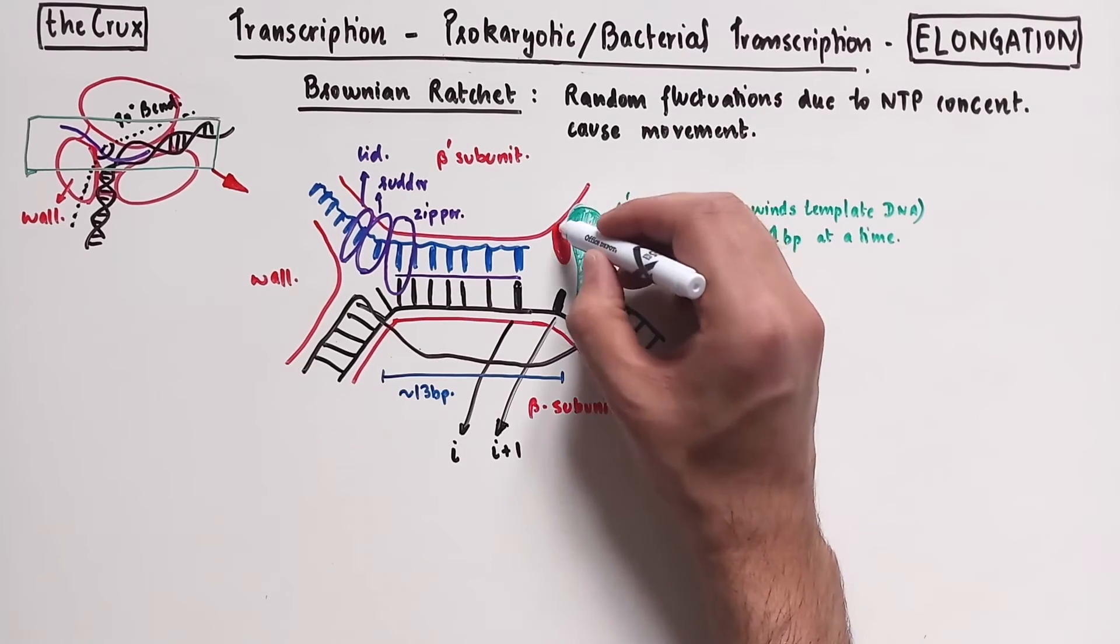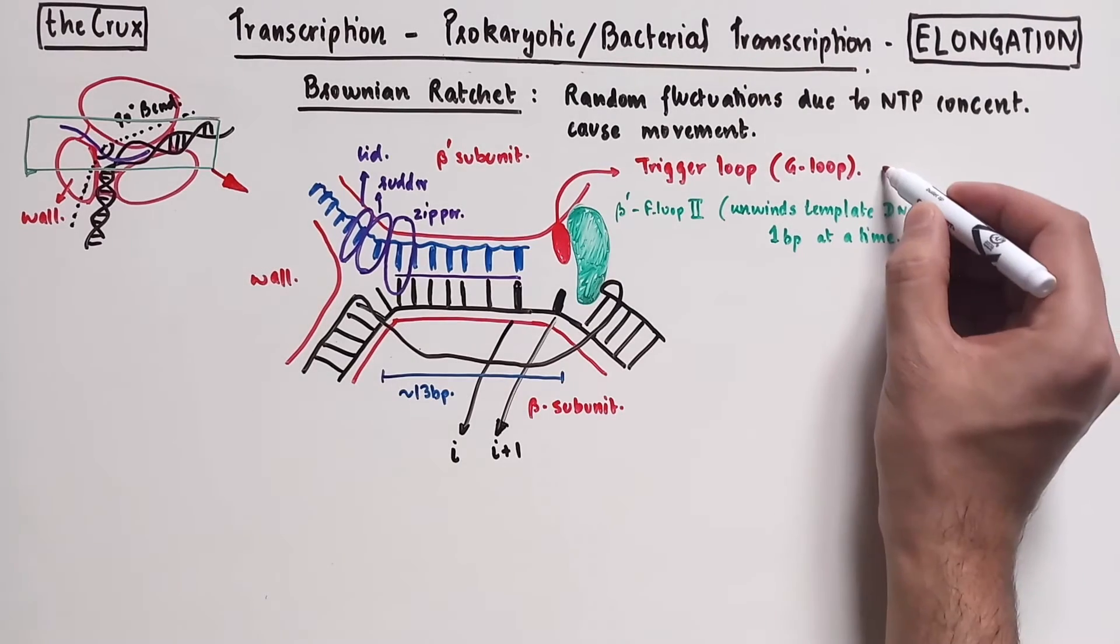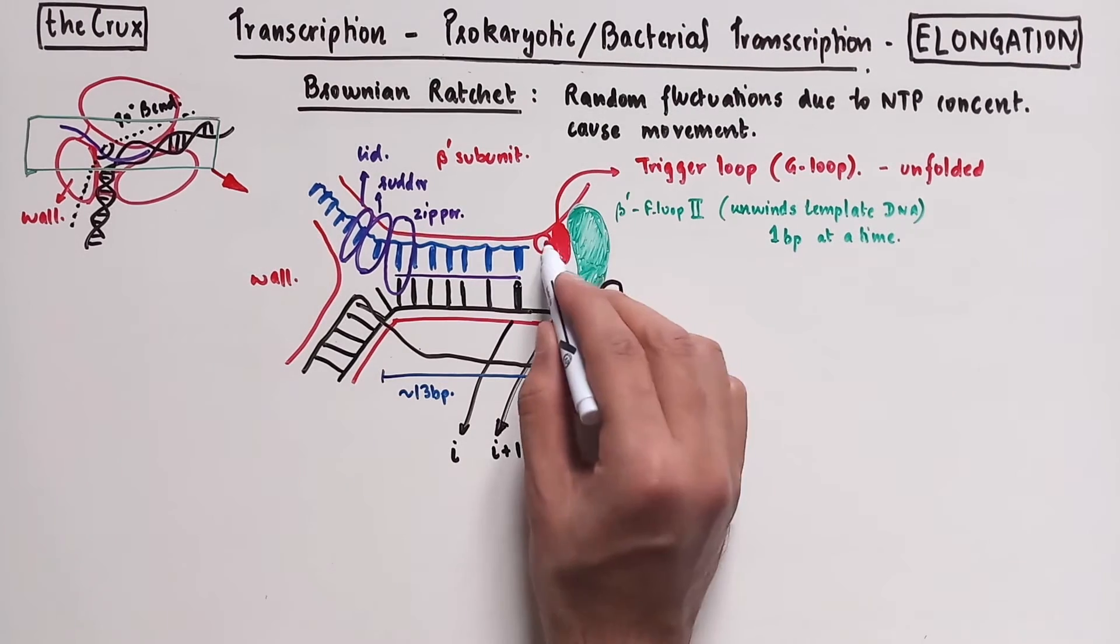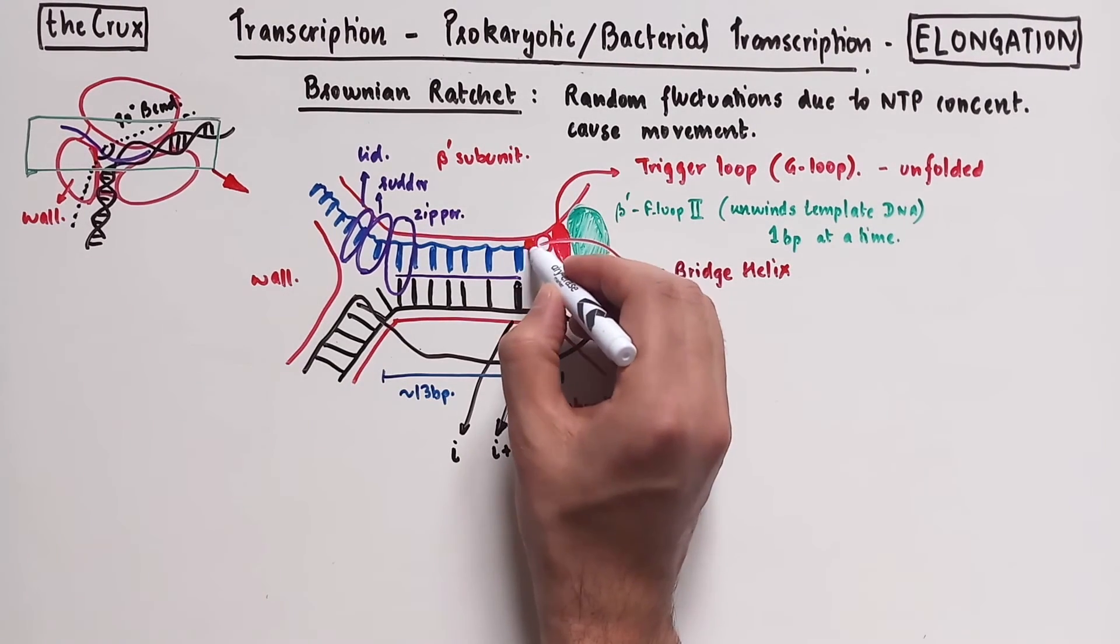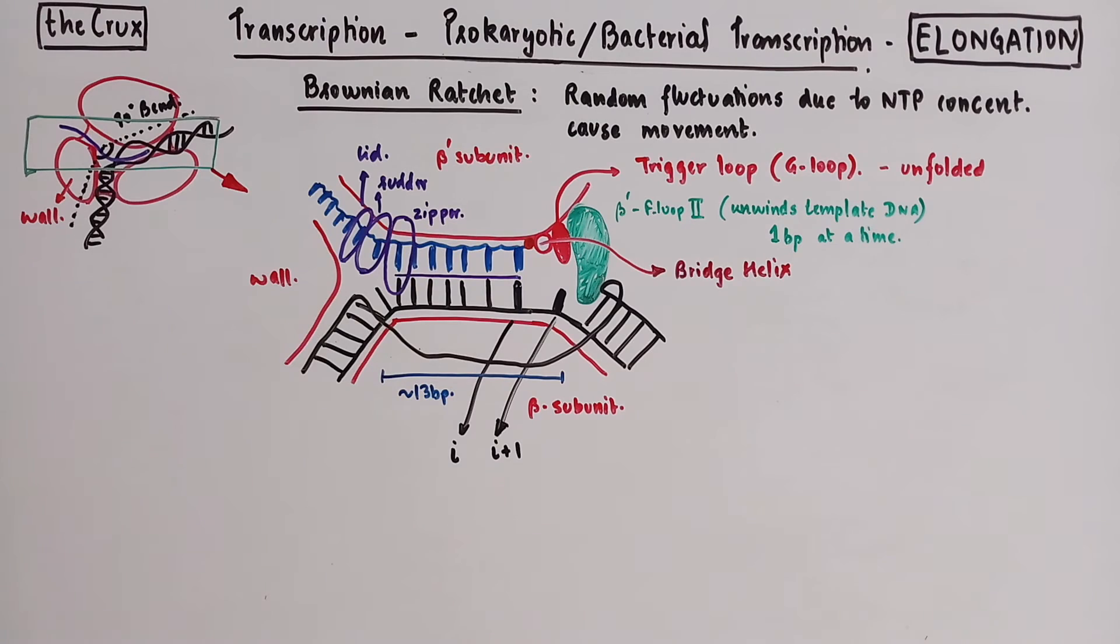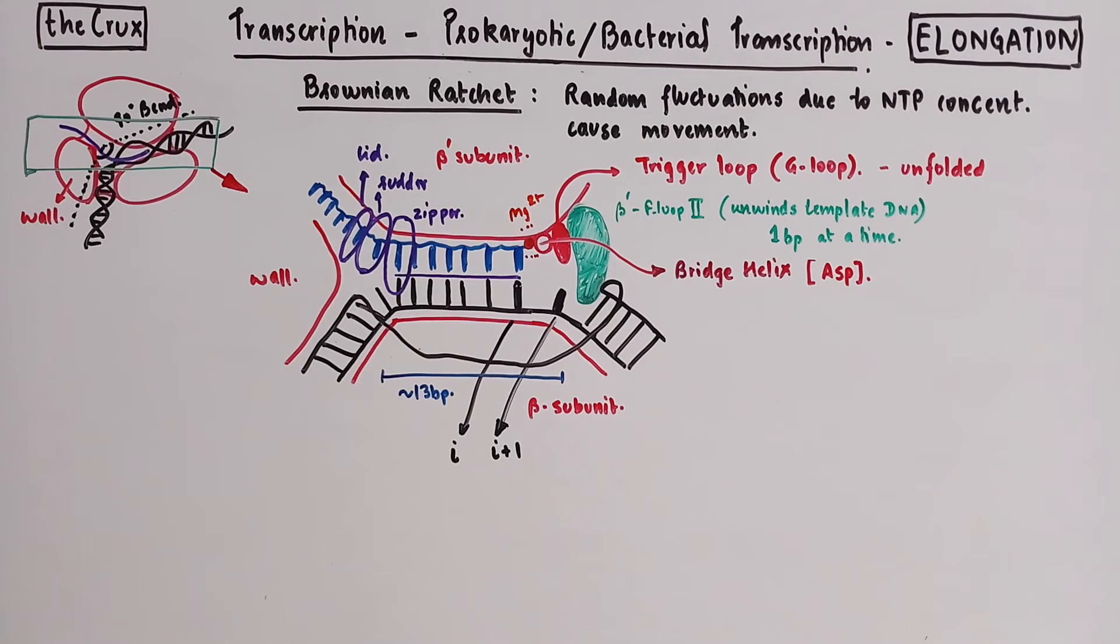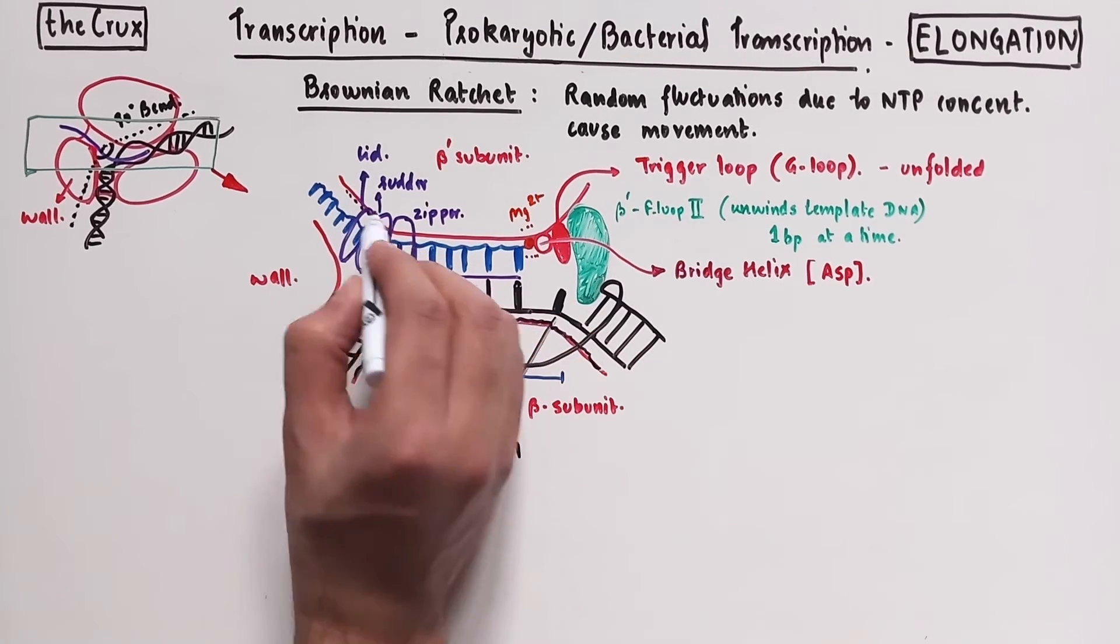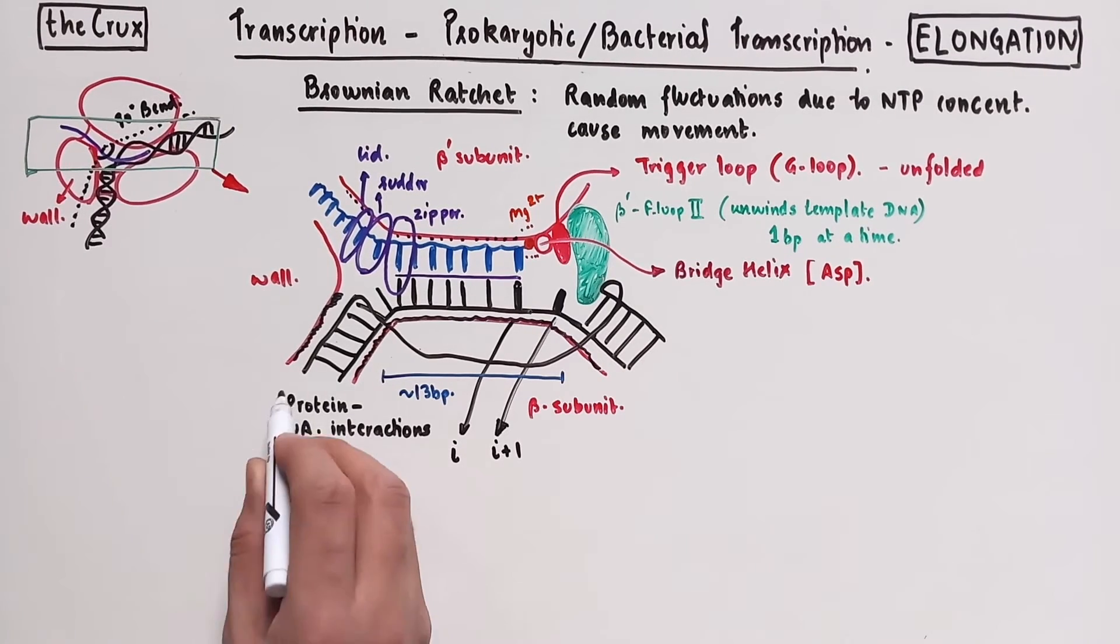At the processing site, you have a trigger loop, which is an alpha helix, sometimes also known as a G loop, which is present in an unfolded state when the I plus one site is unbound by the RNA. Next to the trigger loop, you have the bridge helix, which is involved in the catalysis reaction. This bridge helix is usually interacting with the magnesium ion, which is important for initiating the nucleophilic reaction. Usually it is the aspartate that chelates the magnesium ions at this active site. Another important thing is that throughout this activity center, the polymerase is actually making contact with the RNA and the DNA. So you have some protein nucleic acid interactions in this activity center.